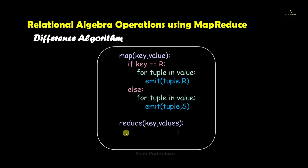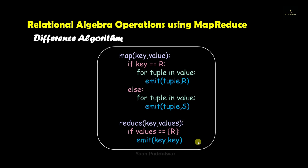If the key is not R, that means the key is S which is table 2, then we will iterate over all the values and store each value in the temporary variable tuple, and emit the key-value pair as (tuple, S). Once the Map task is done we will move on to the Reduce task. In the Reduce task, we check whether the current values are from table R (T1). If yes, we emit (key, key); if values include both R and S we exclude that record, because in difference only values from table 1 that are not in table 2 are counted in the final result.